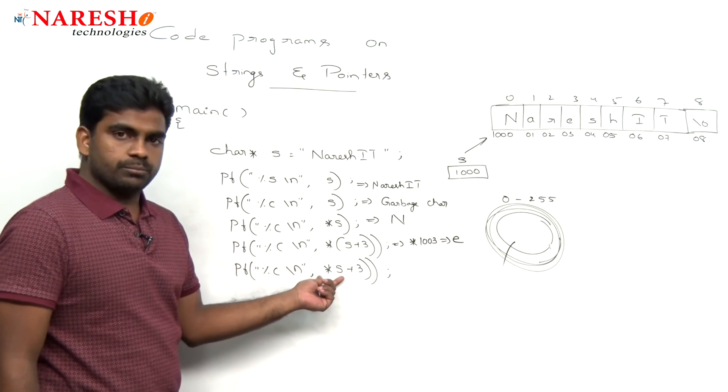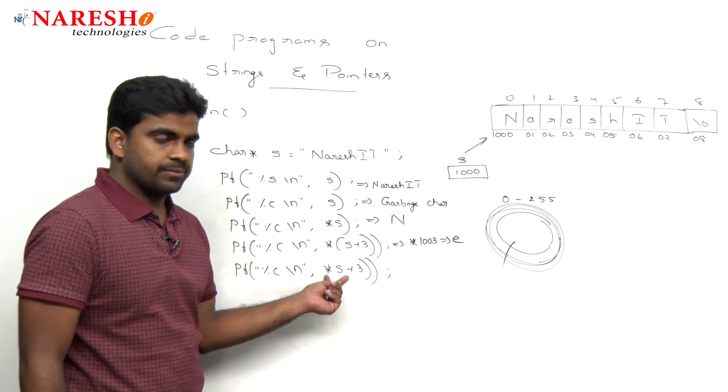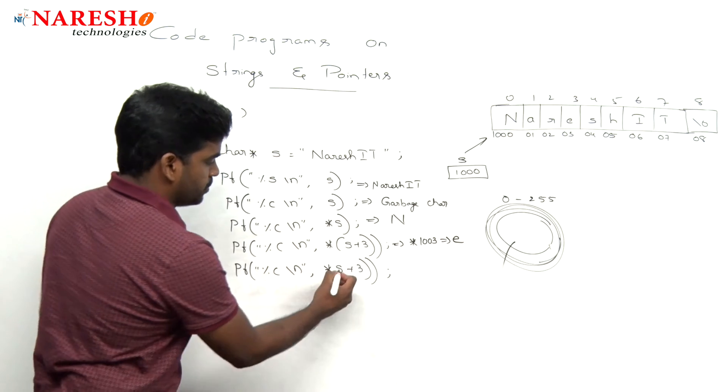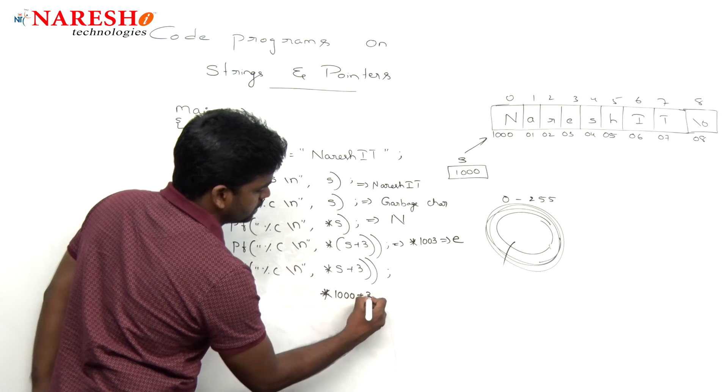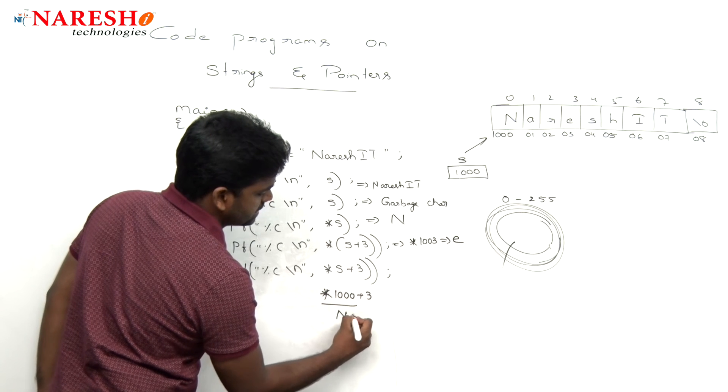And now here, one more important thing. Pointer S means what? Capital N. Pointer to 1000 plus 3 - pointer to 1000 is N plus 3.